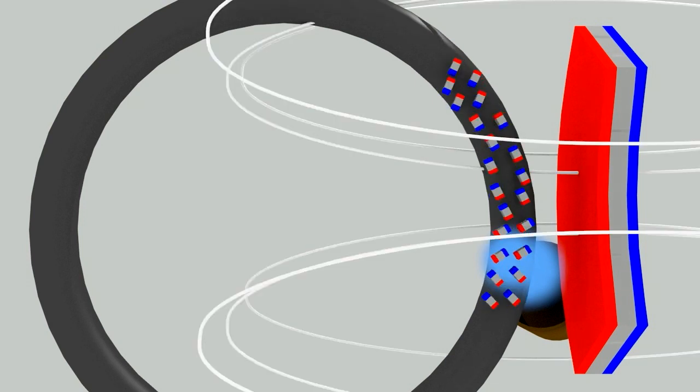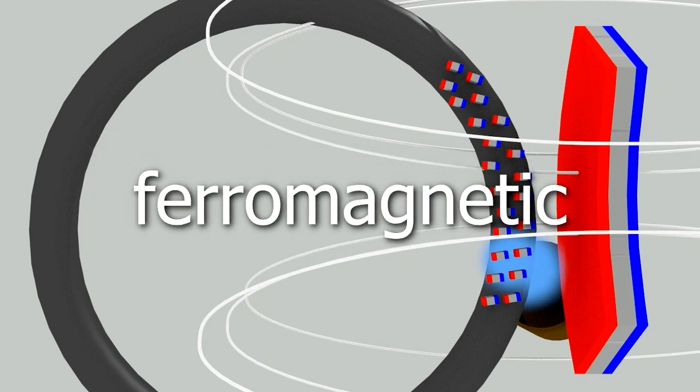But when we put it in the magnetic field of a permanent magnet, the atoms in the domains now point in the same direction, lining up with the magnetic field. Now the nickel behaves like a magnet as a whole, and is attracted to our permanent magnet. We call a material that behaves like this a ferromagnetic material.